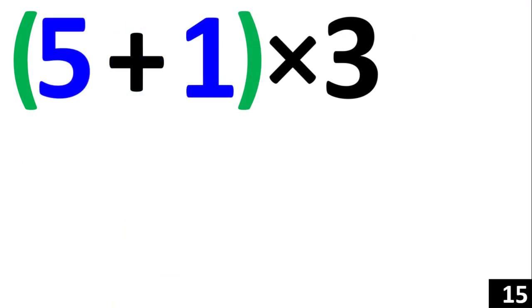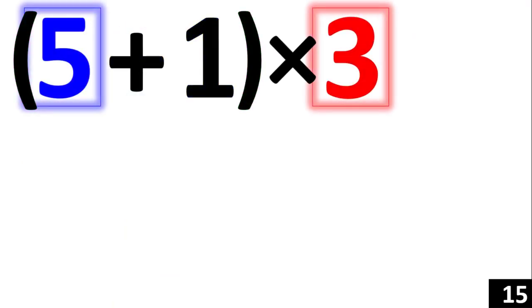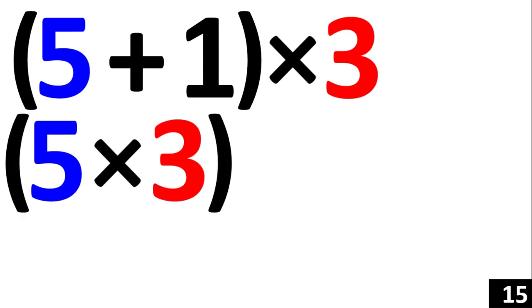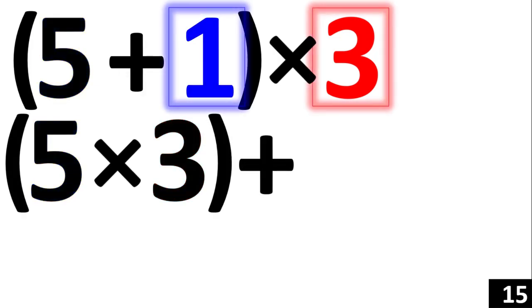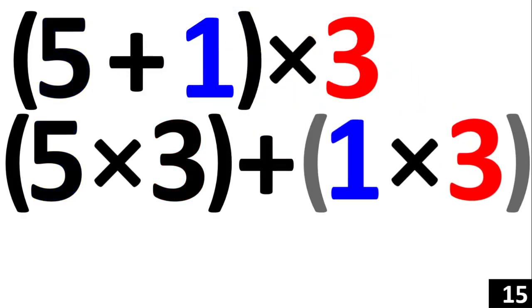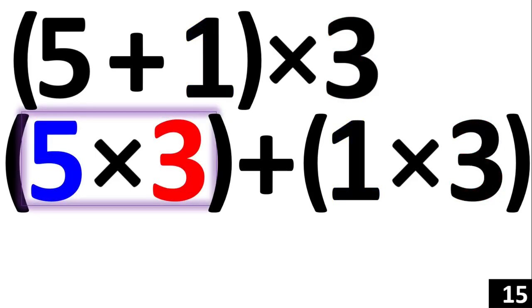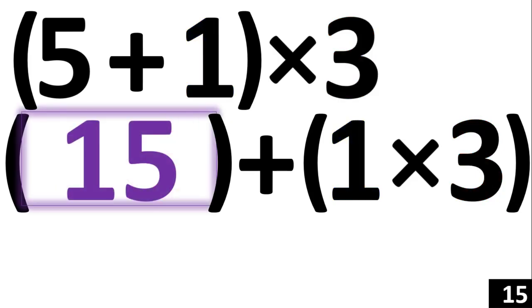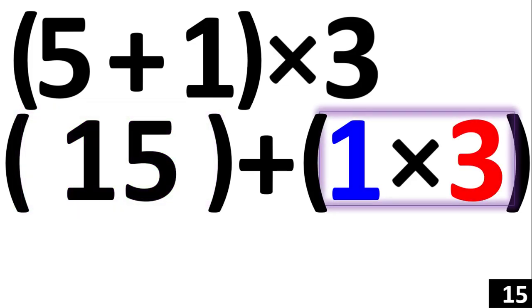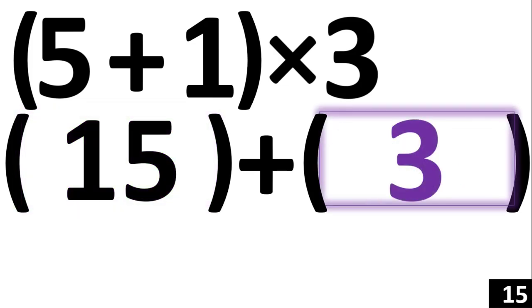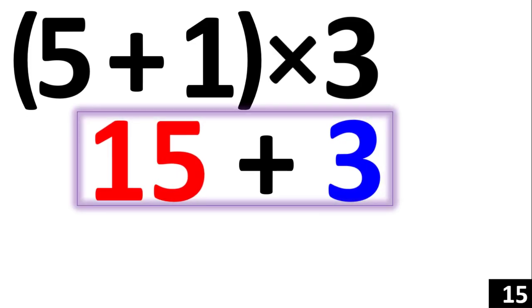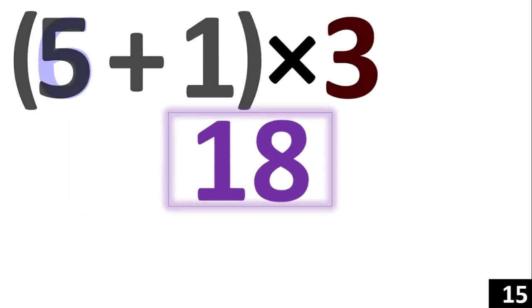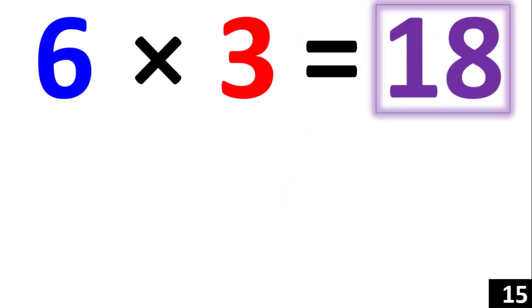6 times 3 is the same thing as 5 plus 1, times 3. Using the distributive property, we now have 5 times 3 plus 1 times 3. 5 times 3 is equal to 15, and 1 times 3 is equal to 3. Adding them together, 15 plus 3 is equal to 18. Therefore, 6 times 3 is equal to 18.